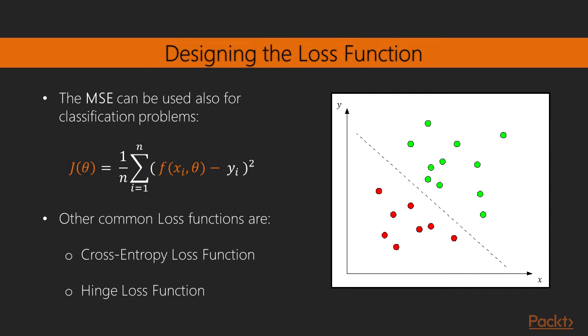Other common loss functions are the cross entropy loss function and the hinge loss function. In the first case, the outputs of the network are interpreted as log probabilities, while in the hinge loss function we try to maximize directly the margin between the two classes.